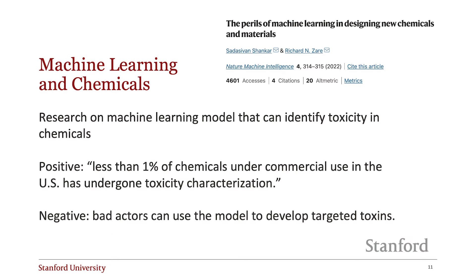Another example of dual use in the context of AI is current research on developing machine learning models that identify toxicity in liquids. The positive effects of this technology are plentiful. Currently, less than 1% of chemicals under commercial use in the US have undergone toxicity characterization. The characterization process is so laborious and costly that chemical growth vastly outweighs capacity to characterize them. However, these models could also be developed to engineer viruses or toxins, and could even be used further to target specific individuals or communities. So we really need to think about how we keep individuals or institutions responsible for self-regulating and anticipating these outcomes.